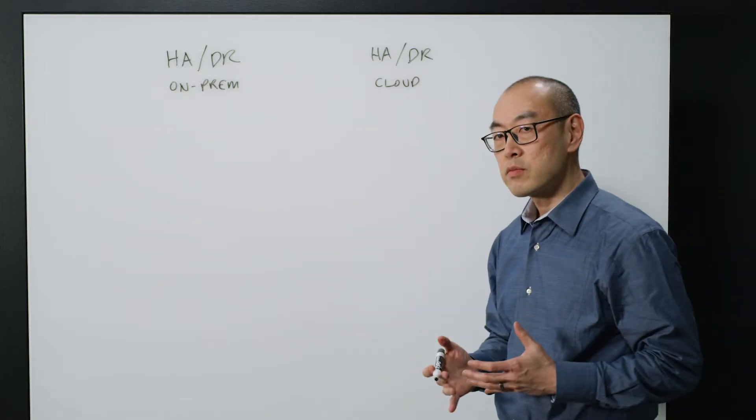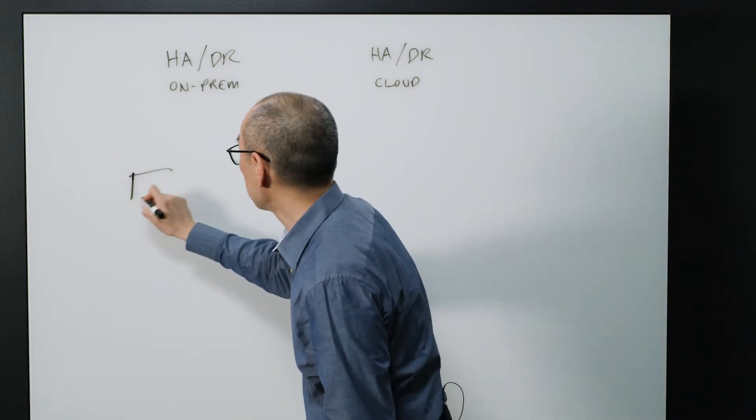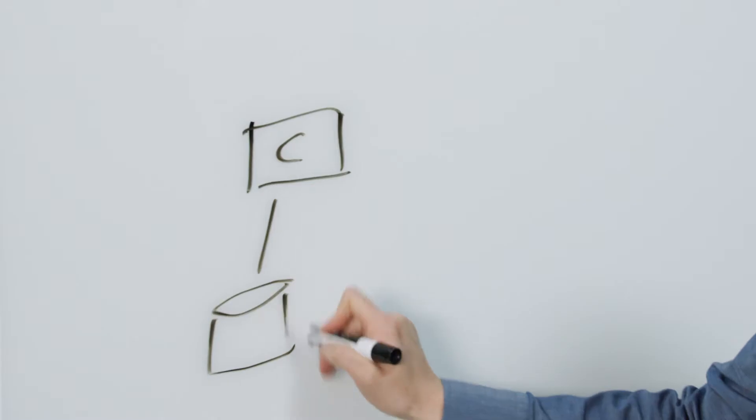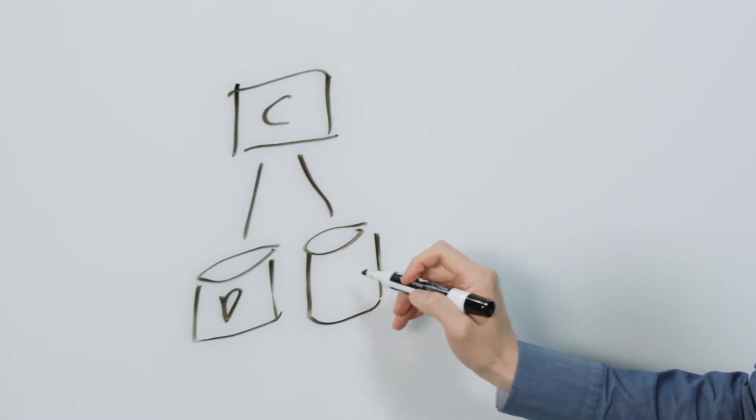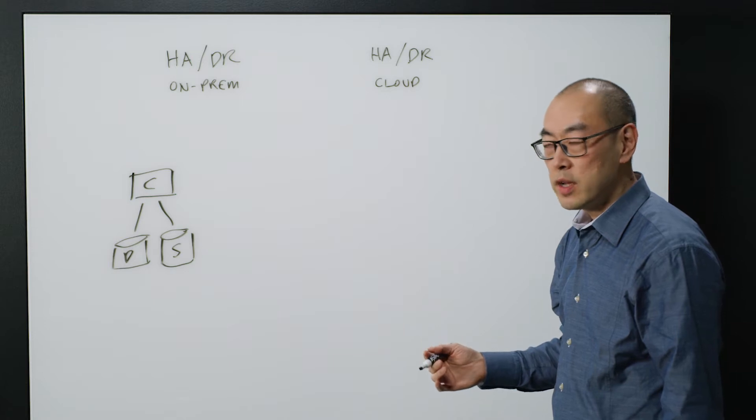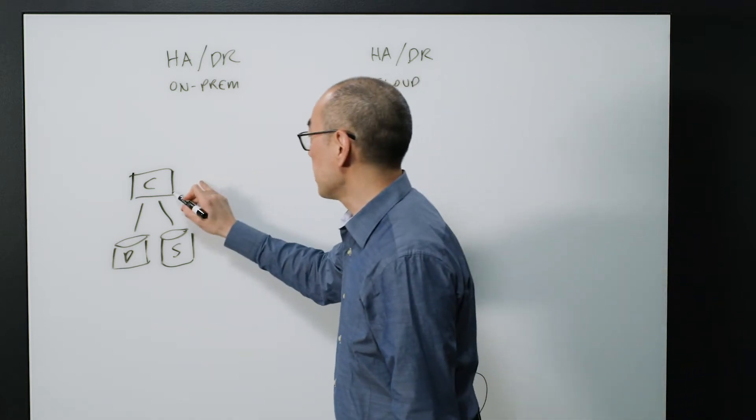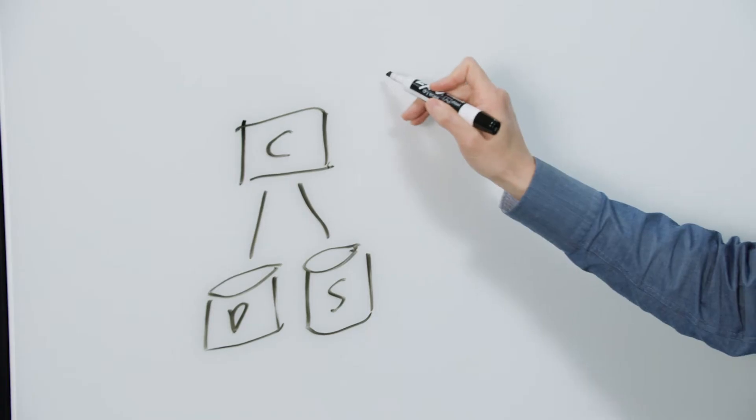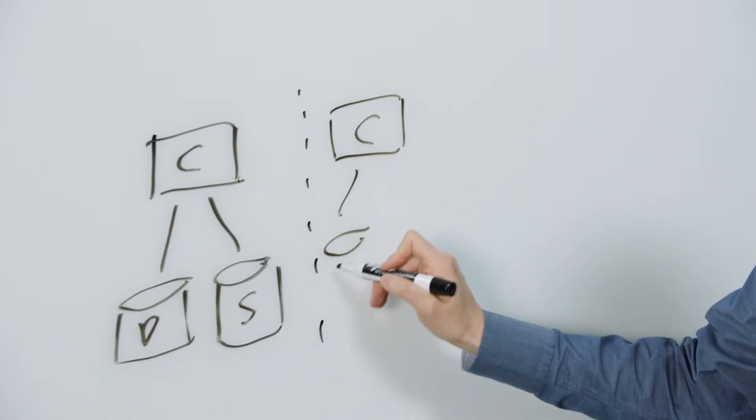So when you're thinking about HA and DR on-prem, let's build a very simple, classic architecture here. So you have some amount of compute, some amount of database, some amount of storage. Typically when you're thinking about HA on-prem, you have to make sure you have enough resources that are separated hardware, separated network, things like that, in order to build that replica.